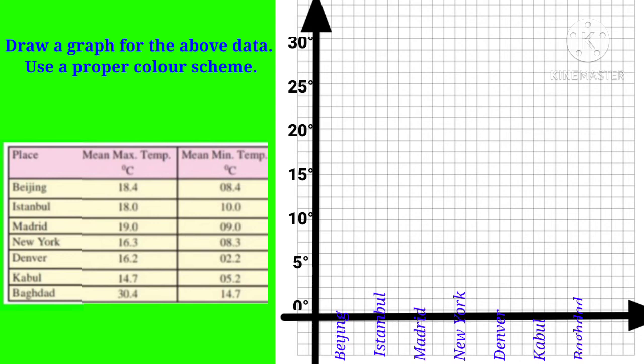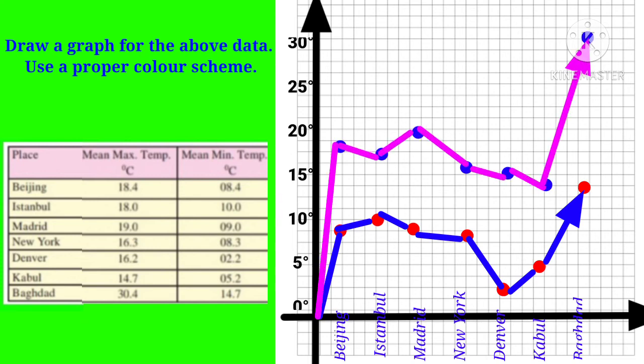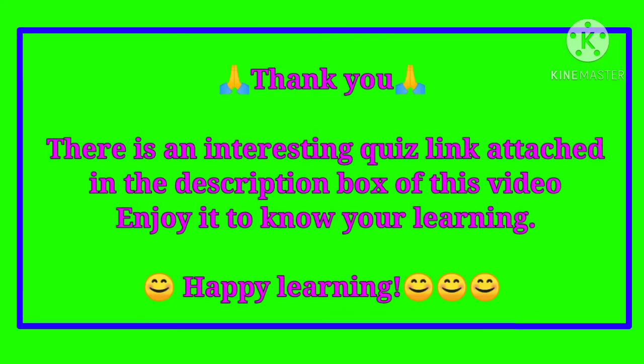First, we will mark the minimum temperature of all these places by putting a dot on the graph. Now let's join all the dots. Next, let's mark the maximum temperature of all these places with the help of dots, and then join all these dots. Students, your graph is now ready.